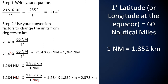Step 1: write your equation. Step 2: use your conversion factors to change the units from degrees to kilometers. We have 21.4 degrees multiplied by 60 nautical miles per 1 degree, which gives 1,284 nautical miles. Then we multiply by 1.852 kilometers per 1 nautical mile. We cancel nautical miles and multiply out to conclude with 2,378 kilometers.